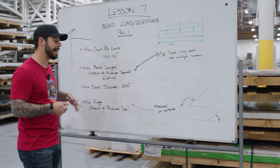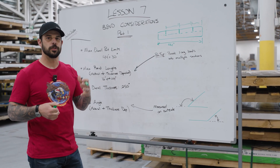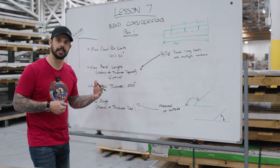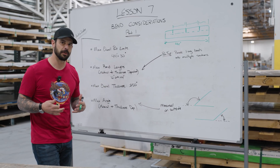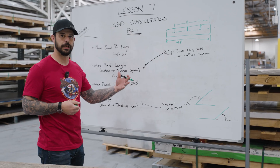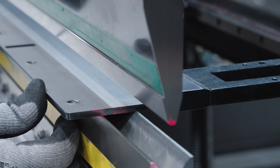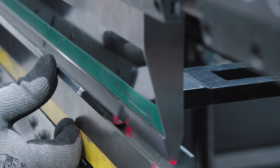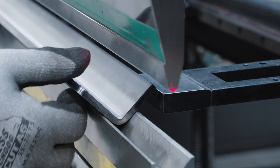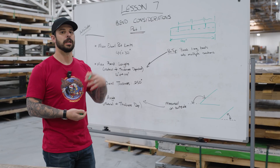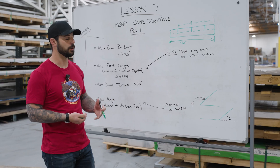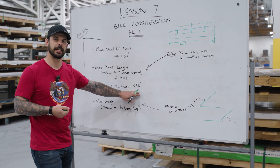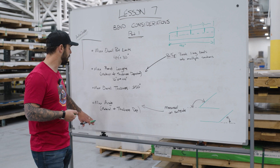The next one is max overall thickness. This is very material dependent — it relies on the brakes we have, the tonnage we're able to provide, as well as the tooling. Right now this is set at quarter of an inch, so we don't go over quarter-inch thick. That is one consideration when designing your parts: if you design a 3/8-inch steel part, we're not going to be able to bend that for you. But this could change in the future, so check out the bending guidelines for the most up-to-date information.